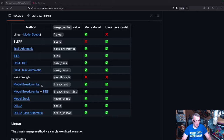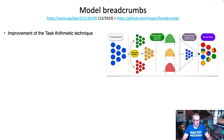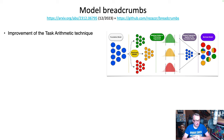Today we're going to cover the latest ones: model breadcrumbs, model stock, and DELLA. The first technique is called model breadcrumbs. It was released at the end of last year, and it's an improvement on the task arithmetic technique. In task arithmetic, we start from a base model, fine-tune it on a bunch of different datasets and tasks, get a collection of fine-tuned models, then create the so-called task vectors by subtracting the fine-tuned weights from the base weights, and then combining those differences.